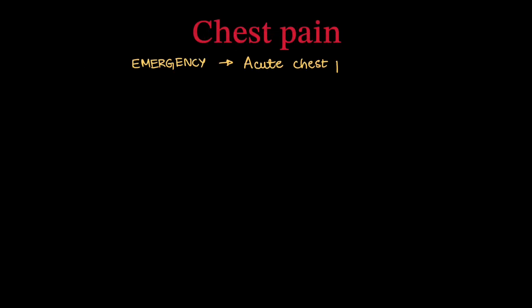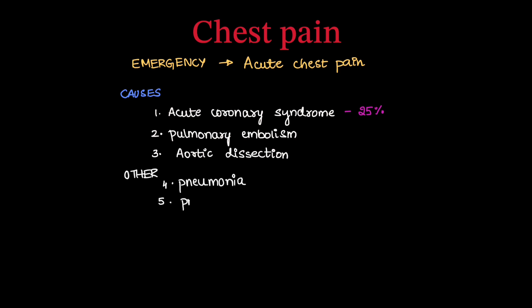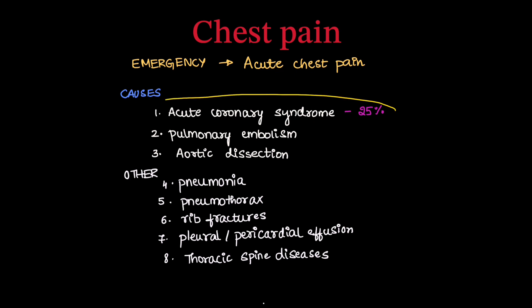Triple rule out CT is useful in acute chest pain presenting in emergency settings. The causes for acute chest pain include acute coronary syndrome, pulmonary embolism, and aortic dissection. Acute coronary syndrome accounts for only 25% of cases; other causes such as pneumonia, pneumothorax, rib fracture, pleural or pericardial effusion, and thoracic spine diseases make up the remaining 75%.